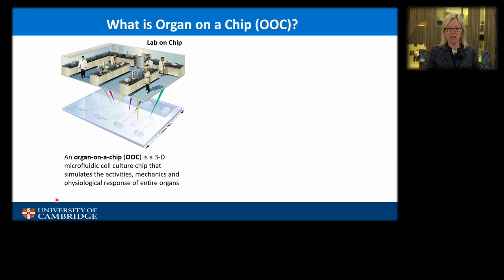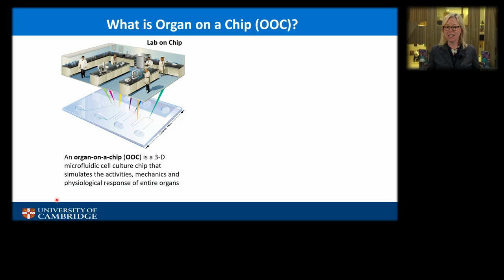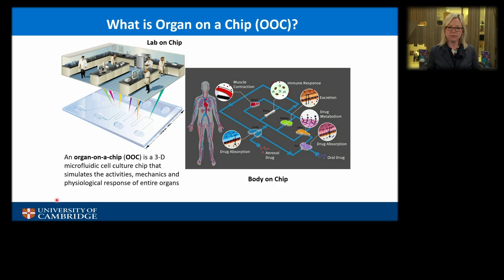I'd like to introduce the idea of organ-on-chip technology. You may have heard of lab-on-chip, an idea developed about 30 to 40 years ago where you could take various processes that happen in a chemistry or biology lab and miniaturize them onto a chip. That's great for reducing reagents, speeding things up, and reducing cost. Going from lab-on-a-chip to organ-on-chip, you integrate organs with fluidic technologies, and you could even have multiple organs — for example, the gut and the brain on a chip.